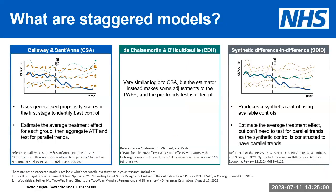I'm going to talk through three separate econometric models that we built in Stata, with the help of Giuseppe and Andrew. I'll refer to them as the CSA, the CDH, and the SD models. The references are contained at the bottom, and I'm happy to share the code and the papers for these with anyone who's particularly interested.